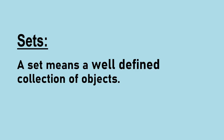A set means a well-defined collection of objects. A set is well-defined if its contents can be clearly defined. Set tab well-defined hoga jab uske elements mein koi doubt nahi hoga, koi uncertainty nahi hoga. For your clear understanding, here is an example: the set of US presidents is a well-defined set because in its content we can write the names of the presidents.